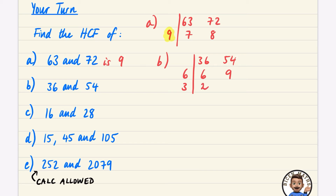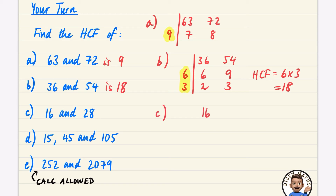It also looks like 6 and 9 are both in the 3 times table: 6 ÷ 3 = 2 and 9 ÷ 3 = 3. Since 2 and 3 have no more common factors, the highest common factor is 6 × 3 = 18.